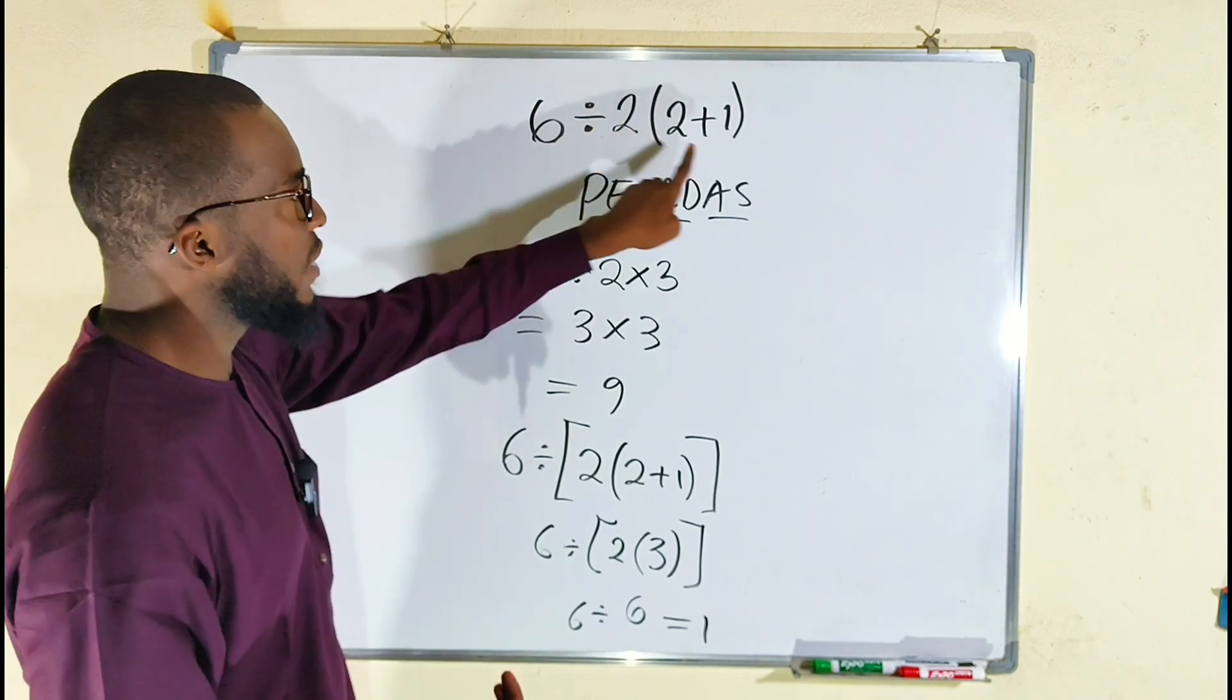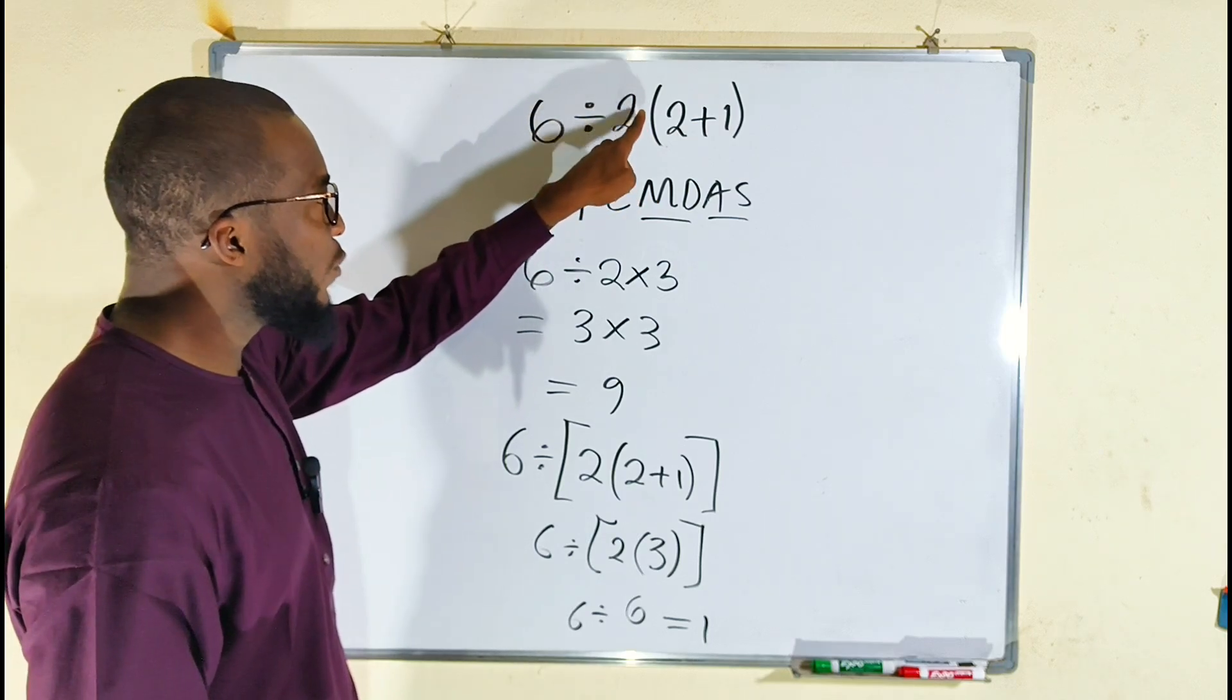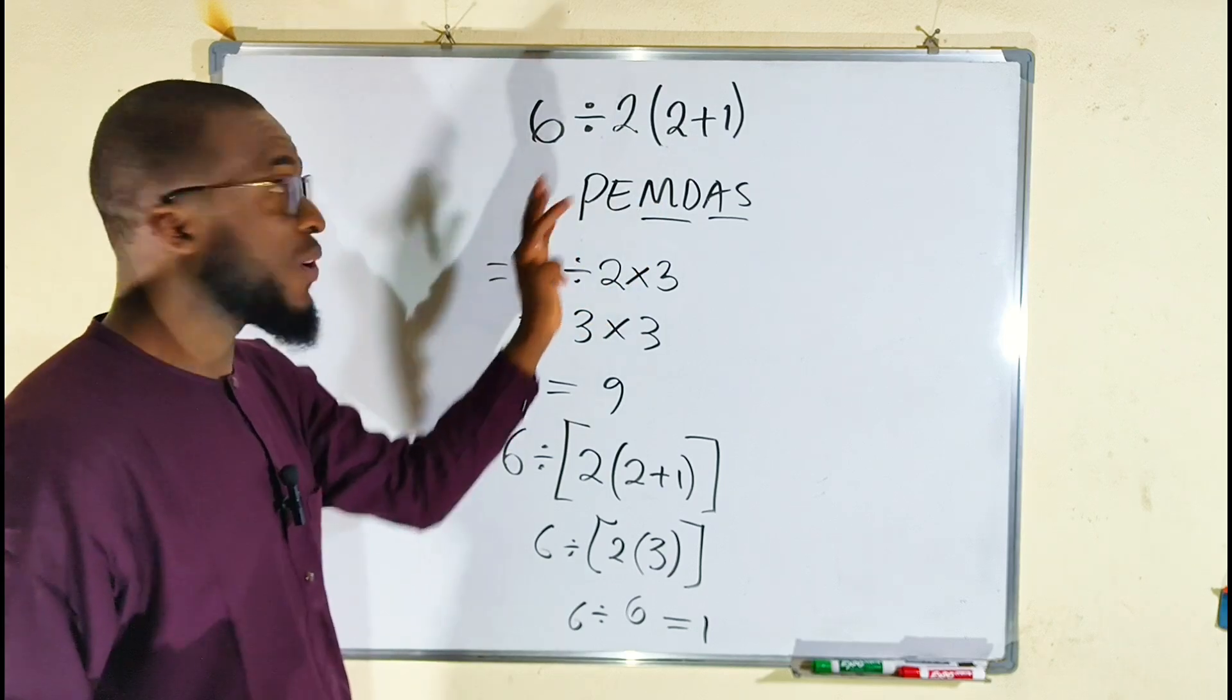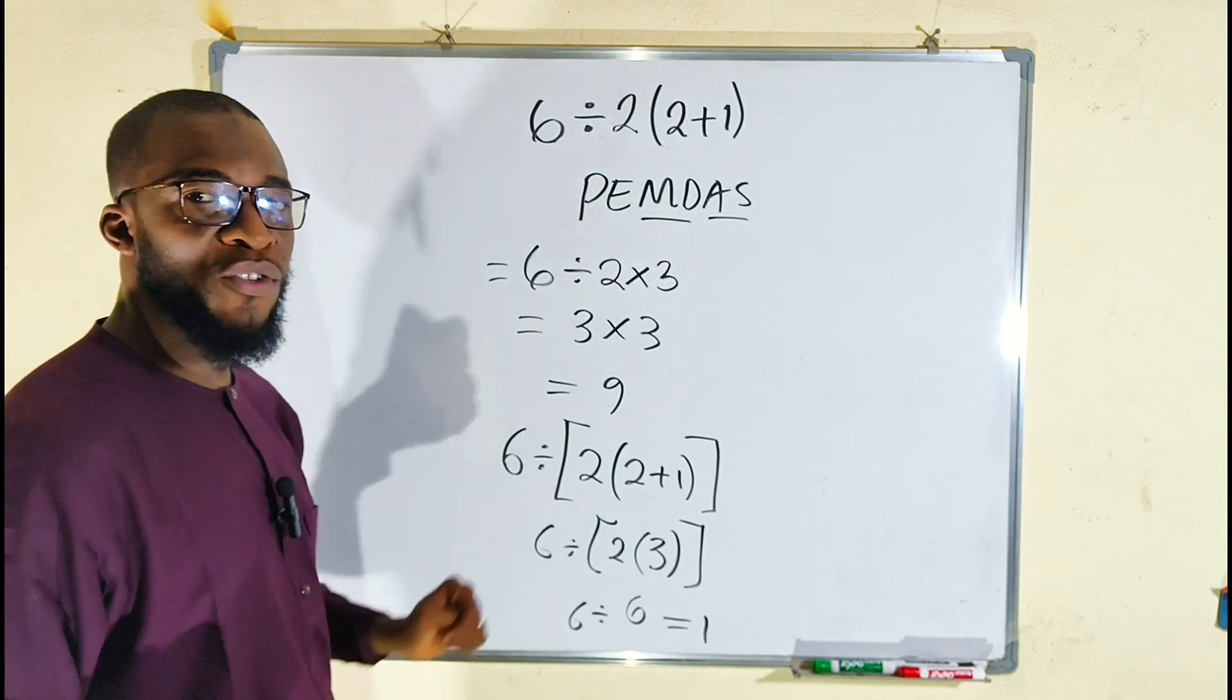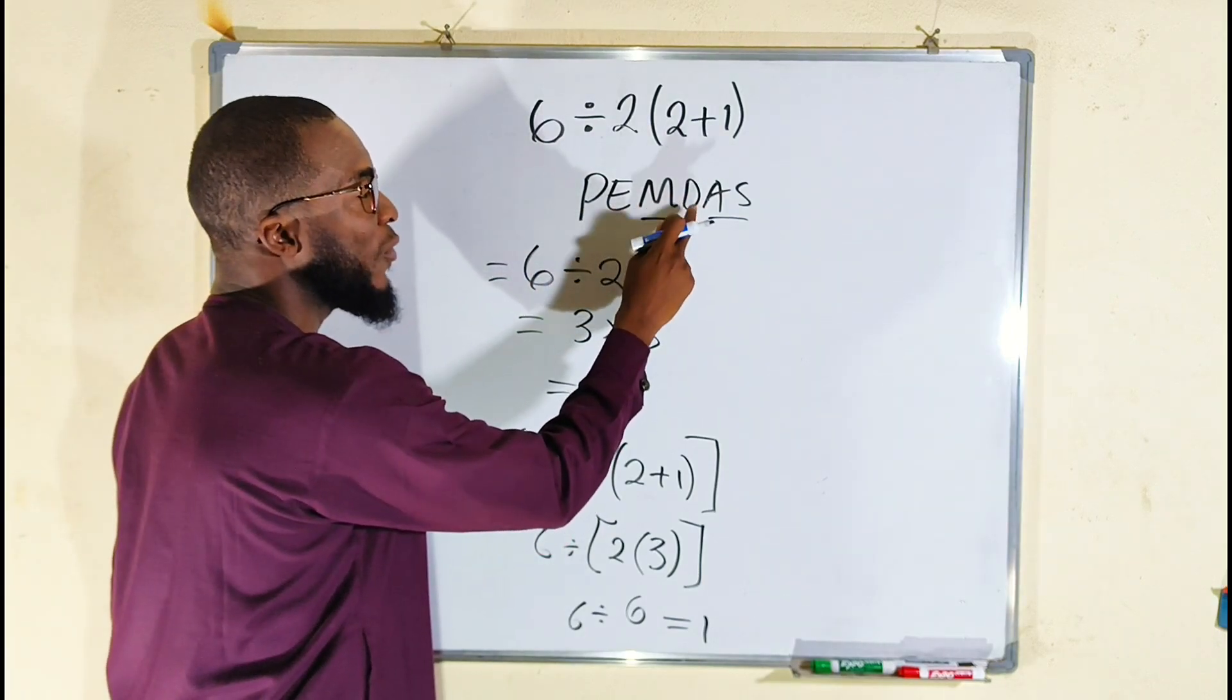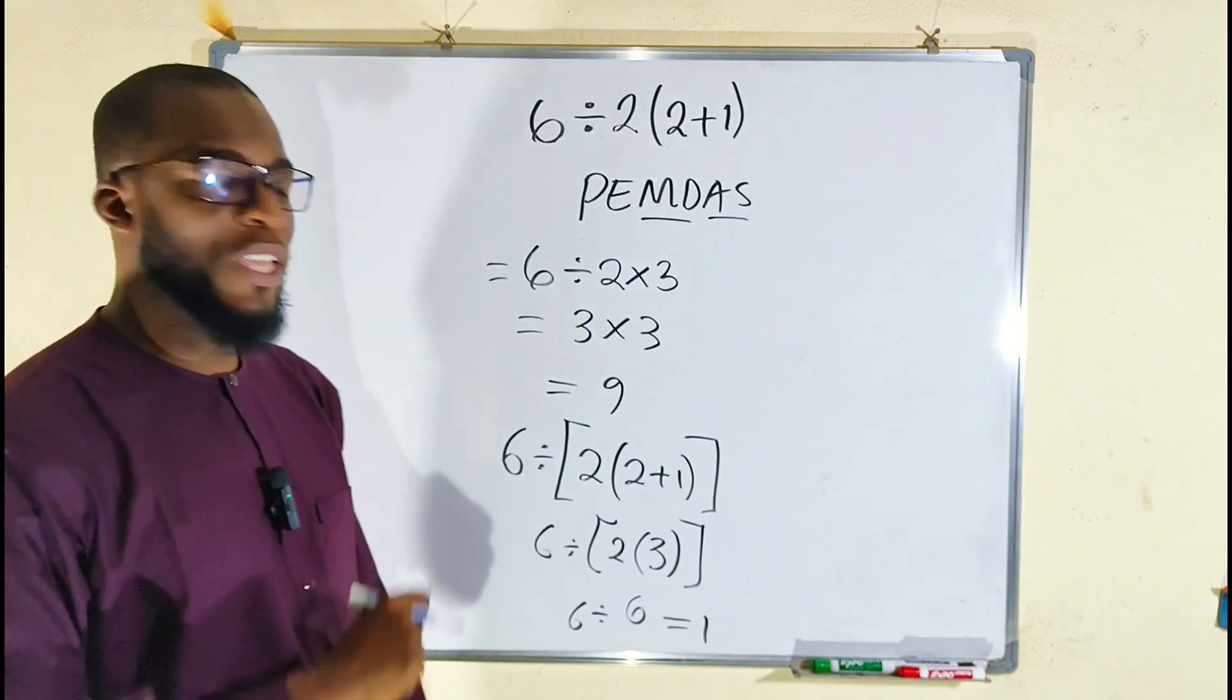The relationship between 2 and this bracket or parenthesis is multiplication. And because we have multiplication and division, you have to carry out the one that comes first, which is division before multiplication. Despite having M for multiplication, you have to start with division because it comes first before multiplication.